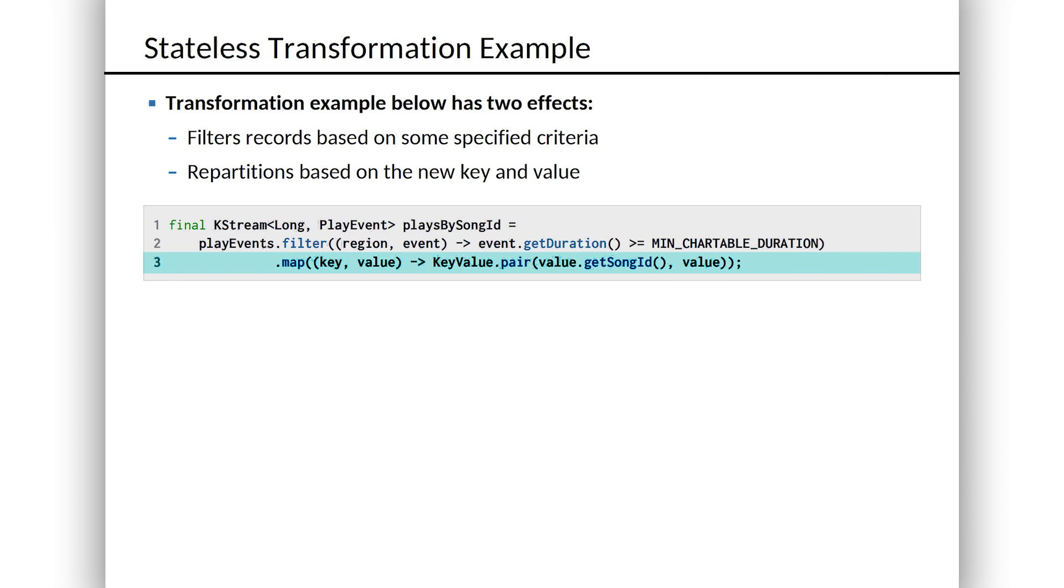After we've filtered out the play events that are too short, less than our chartable duration, we're going to repartition the stream. If you look at it, the key is a string and apparently that string is a region code of some kind. Now the details of the application don't matter here. What does matter is that's not a super useful key.